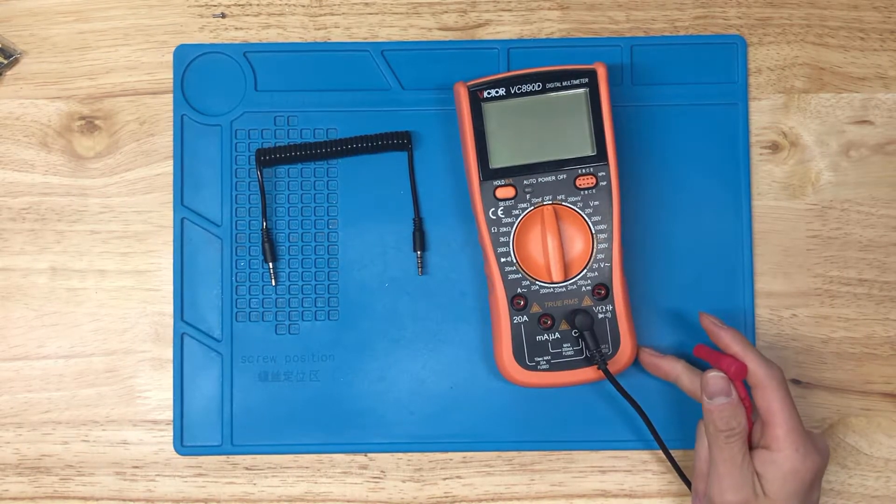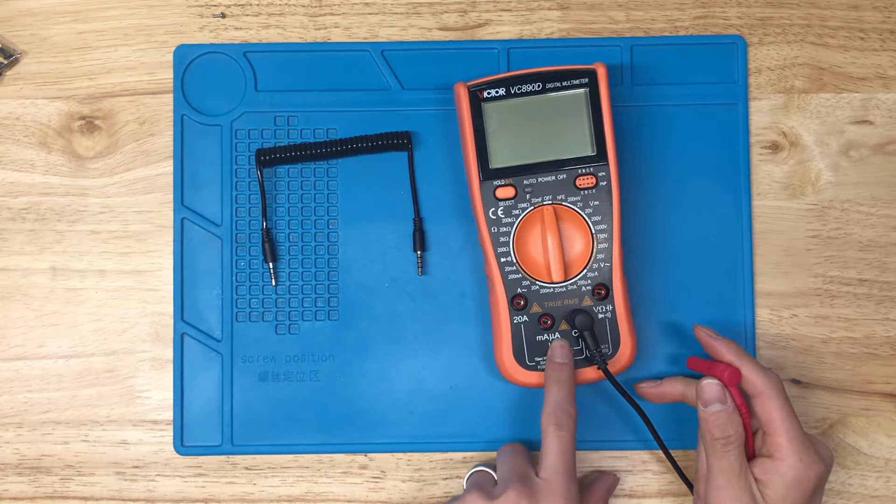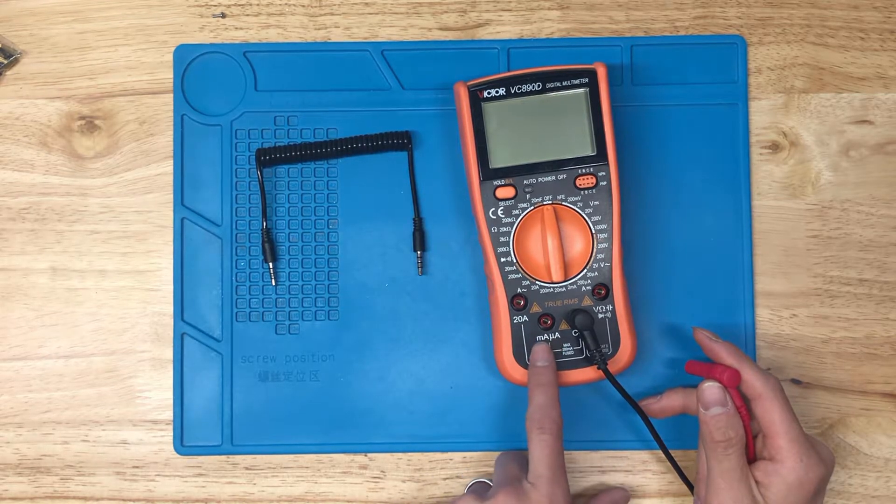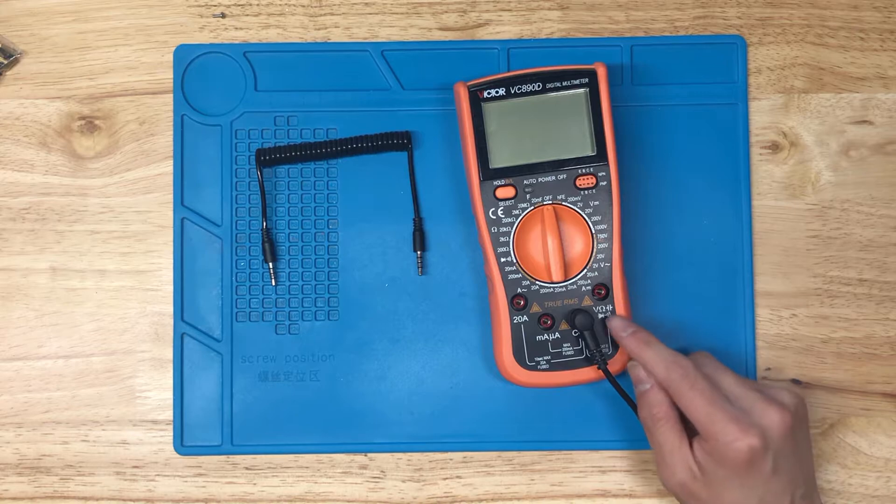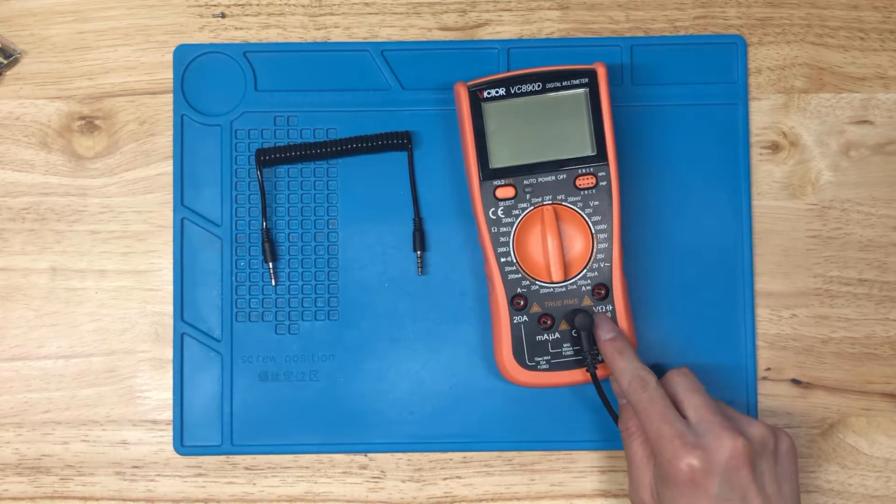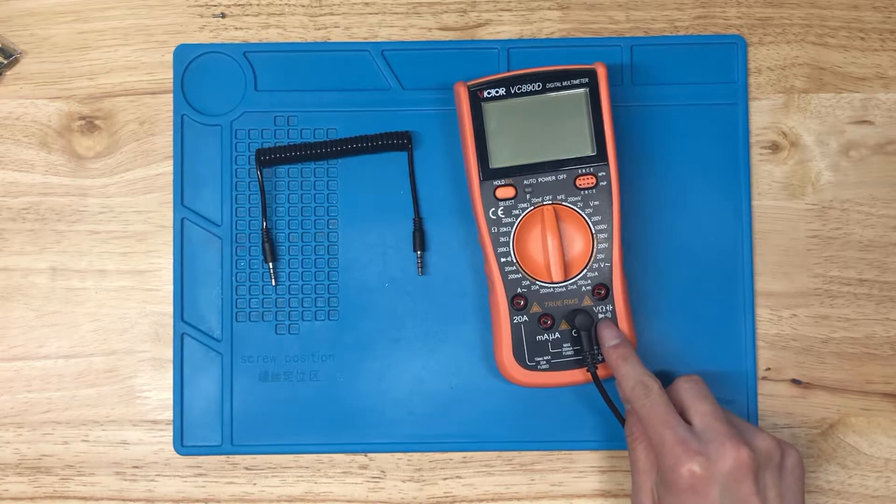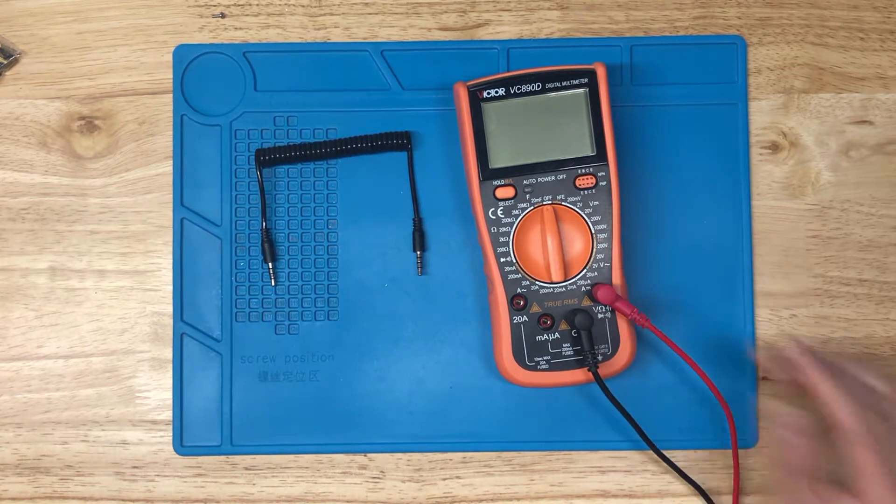On this particular multimeter, we've got amp measurements, so 20 amp and milliamps, microamps. And then the one we really want here is voltage, ohms, capacitance, and then diode beep mode. I'll plug that in there.